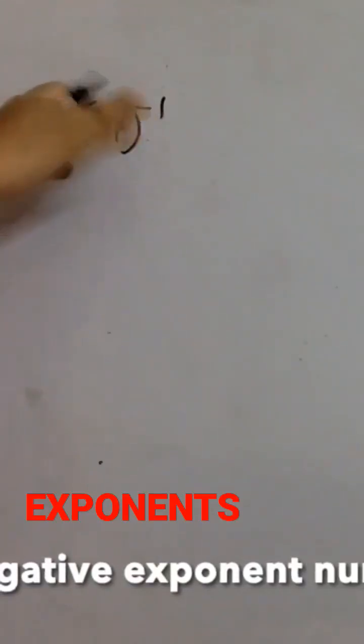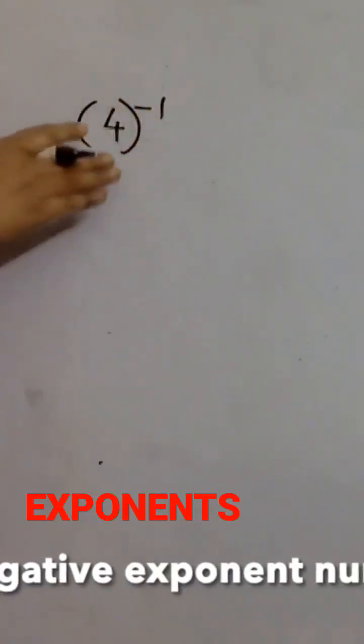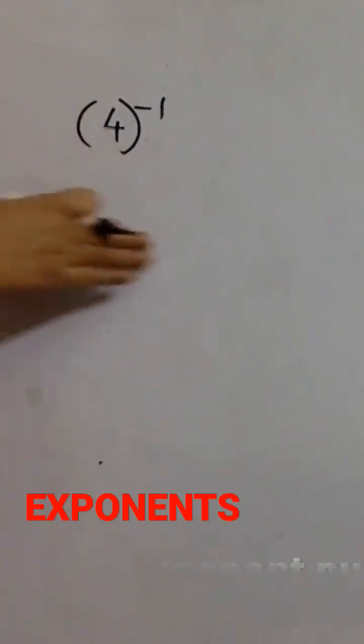If it is going from numerator to denominator, the sign changes. If you are going from denominator to numerator, even then the sign changes. So now if you want to write this...